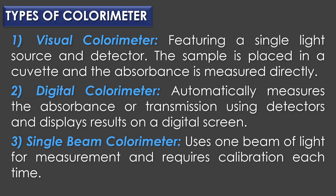The first type is the visual colorimeter, which is the most basic type featuring a single light source and detector. The sample is placed in a cuvette and absorbance is measured directly. The second type is the digital colorimeter, which automatically measures absorbance or transmission using detectors and displays results on a digital screen. The third type is the single beam colorimeter, which uses one beam of light for measurement and requires calibration each time.